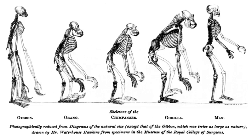Migration into or out of a population can change allele frequencies, as well as introducing genetic variation into a population. Immigration may add new genetic material to the established gene pool of a population, while emigration may remove genetic material. As barriers to reproduction between two diverging populations are required for the populations to become new species, gene flow may slow this process by spreading genetic differences between the populations.